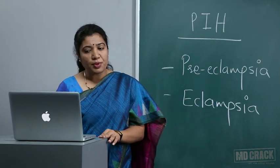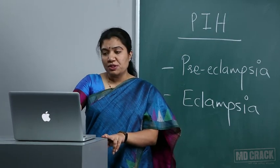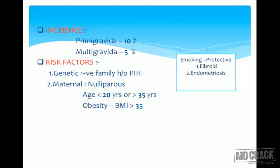The incidence of PIH is common in primigravida — it is called a disease of primi and is less commonly seen in multigravidas. Risk factors include genetic predisposition: if a first-degree relative like the mother had PIH, the patient has more predisposition. Importantly, smoking is a protective factor for PIH — a smoker has less risk of having PIH.